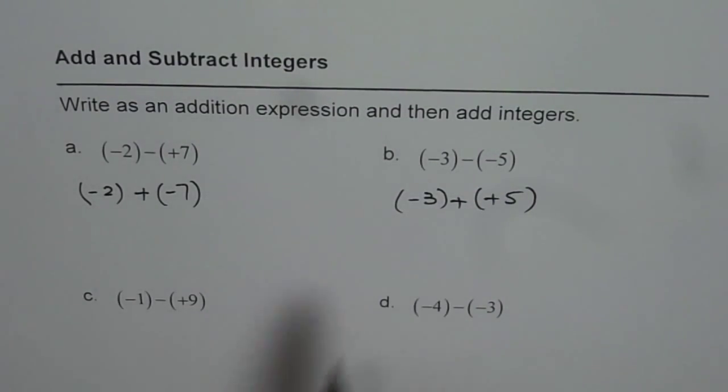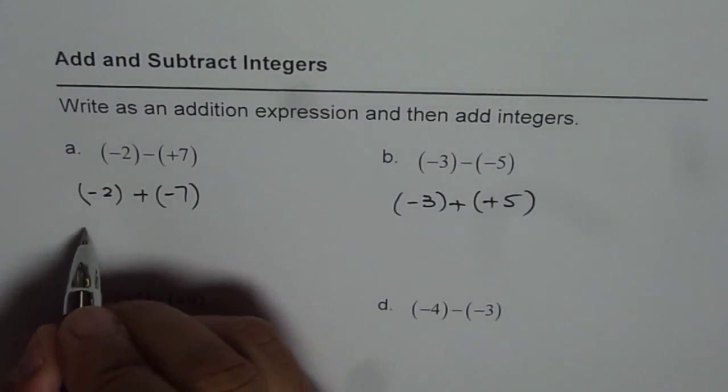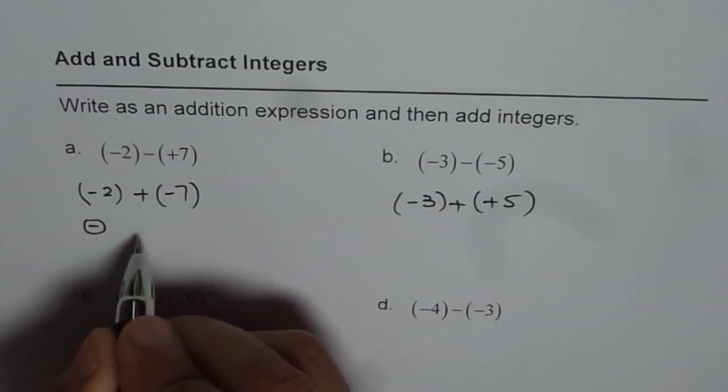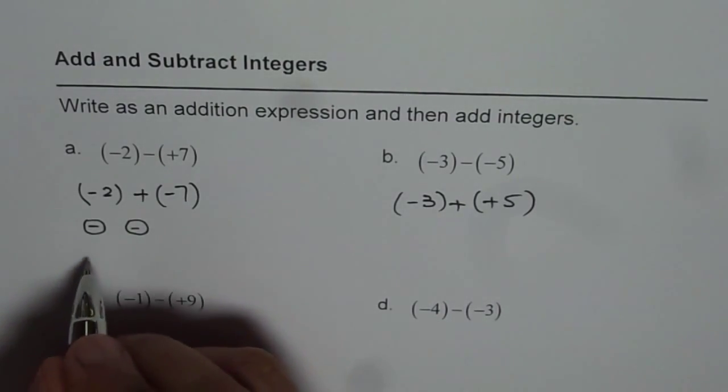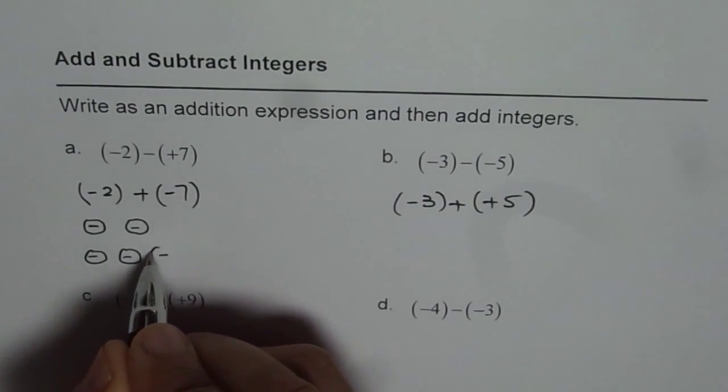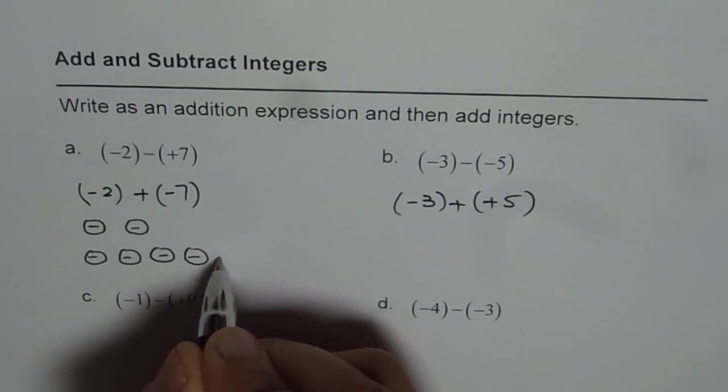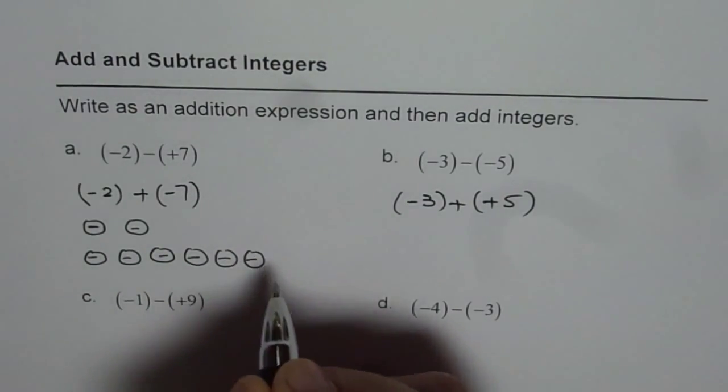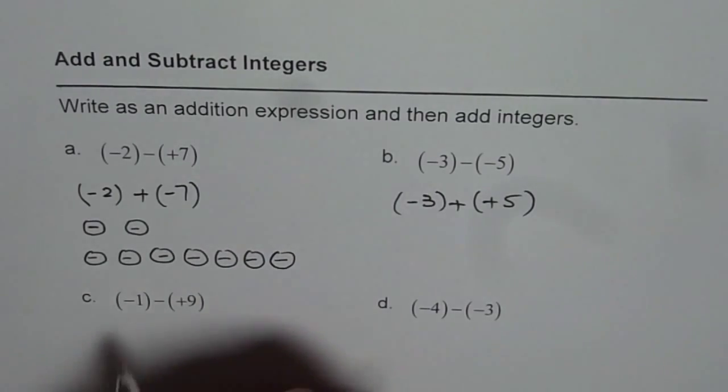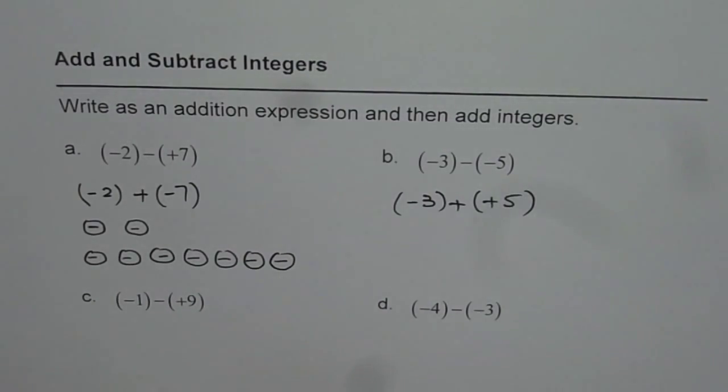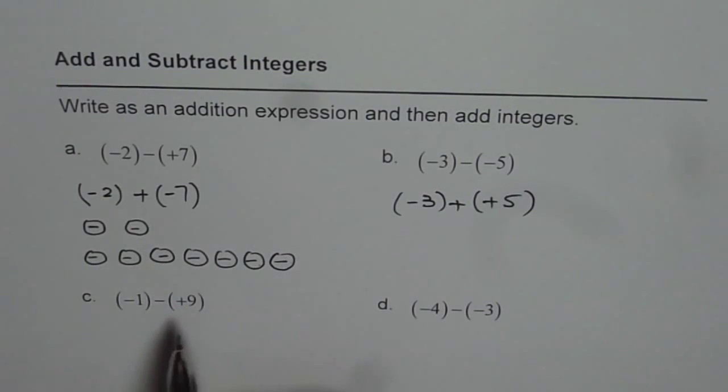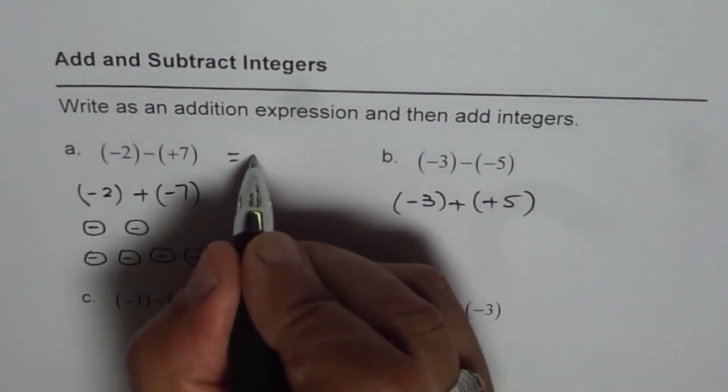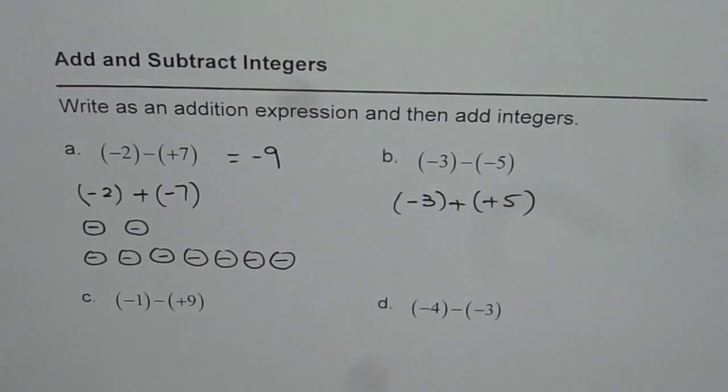Now I'm going to use counters to add these integers. Minus two means two negative counters. Two negative counters. And minus seven means seven negative counters. So these are my second seven negative counters. One, two, three, four, five, six, seven, eight, nine. Seven plus two, nine but negative counters. So it's minus nine.